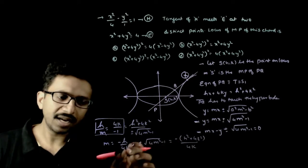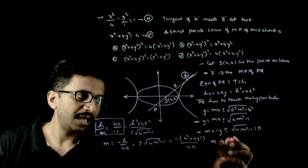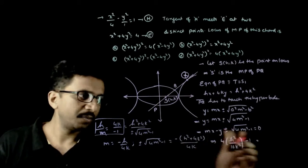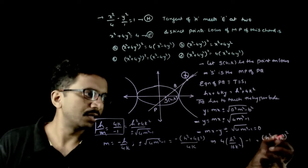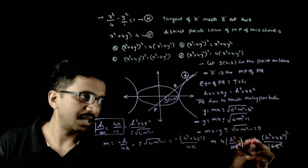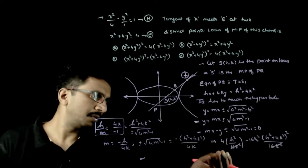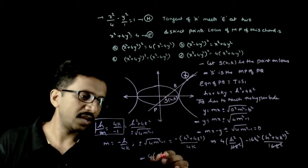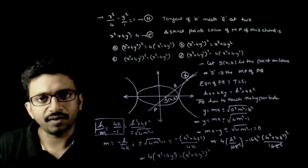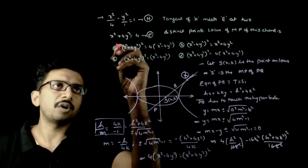Now squaring both sides and substituting the value of m, we get: 4(m² - 1) = (h² + 4k²)² / 16k², where m² = h²/16k². After cancelling 16k², the equation becomes: 4(x² - 4y²) = (x² + 4y²)², substituting h→x, k→y. So the locus is (x² + 4y²)² = 4(x² - 4y²), which is option A.